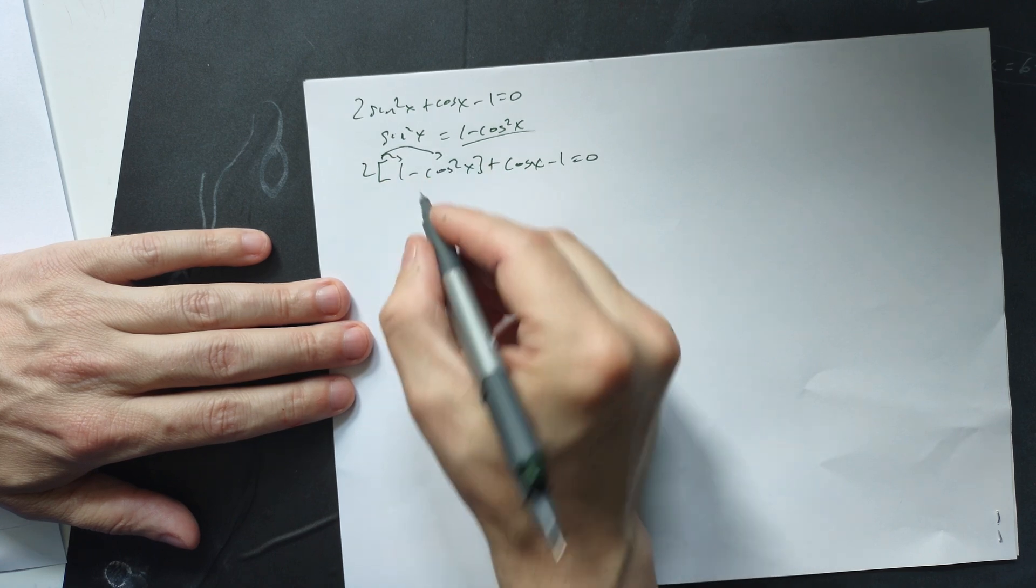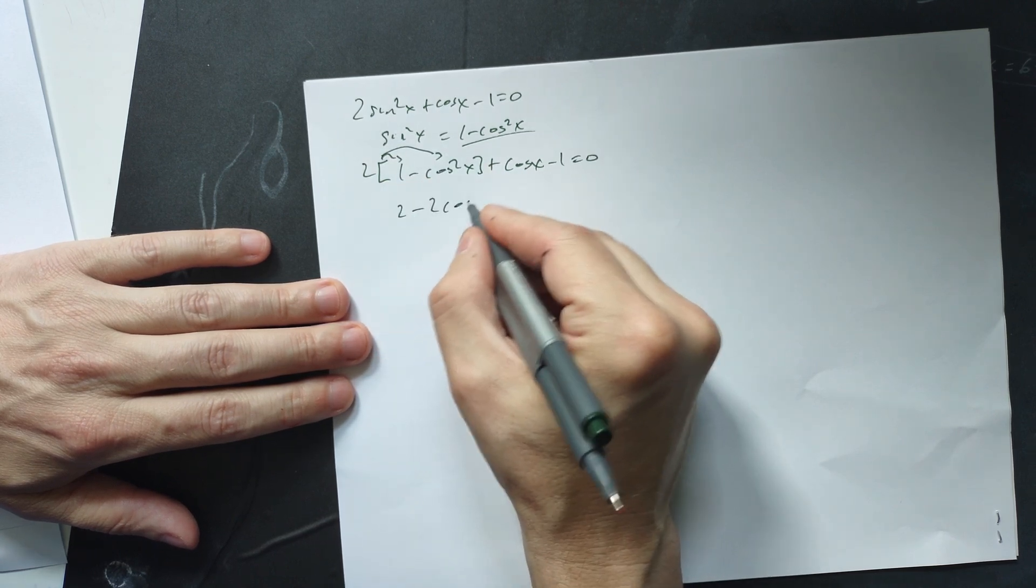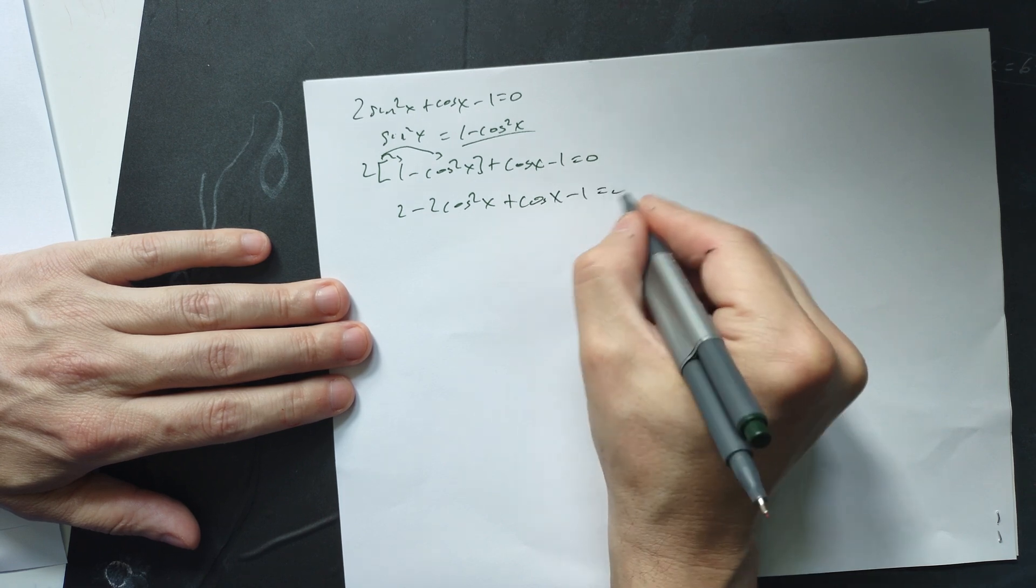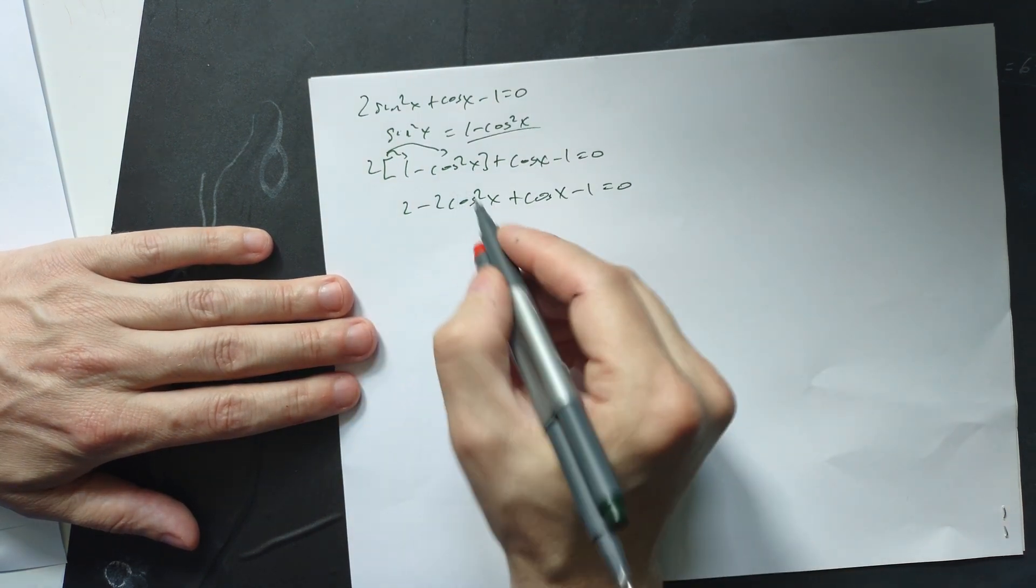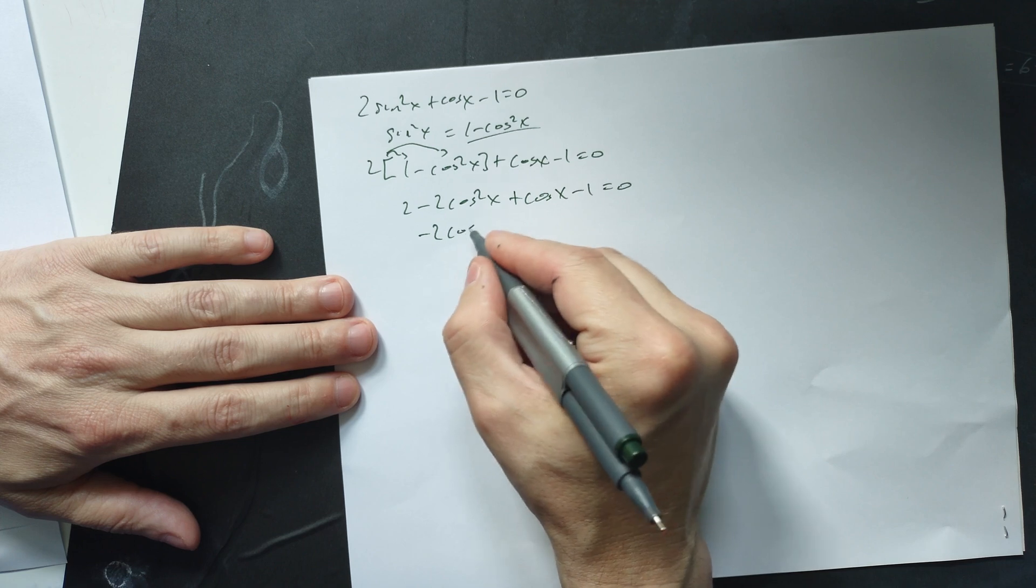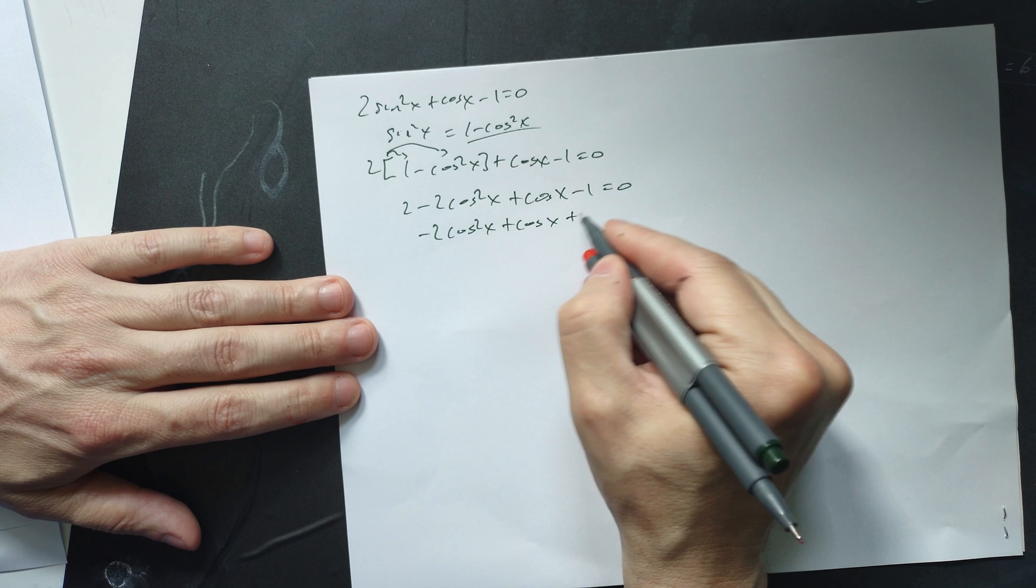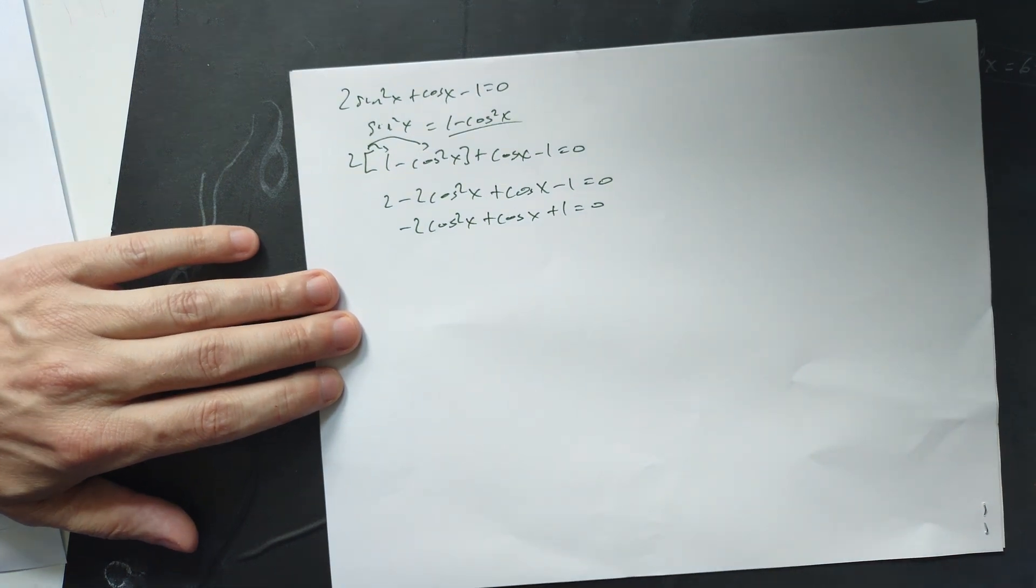Distribute this over to here and over to here. So 2 minus 2 cosine squared x plus cosine x minus 1 is equal to 0. So regroup a little bit. Negative 2 cosine squared x plus cosine x, 2 minus 1 is at first a positive 1 equaling 0 right there.